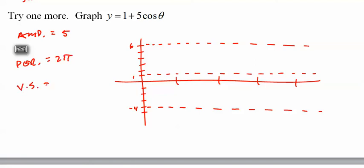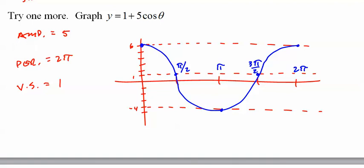Cosine starts at the top. There's no negative. And oops, I forgot to label my four tick marks. That's it.